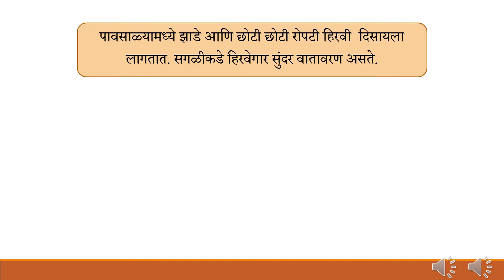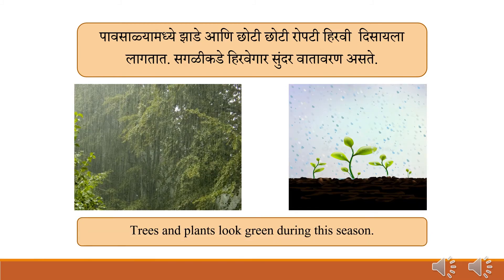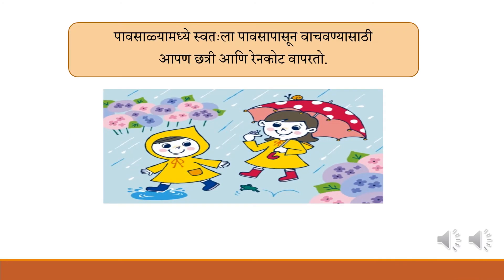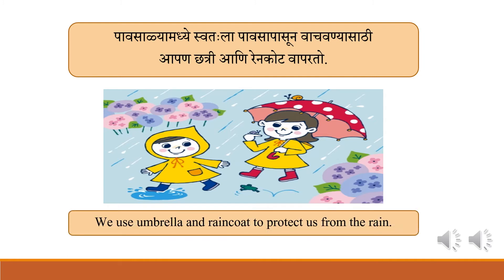During the monsoon season, rivers flow and small plants start looking green. The weather looks beautifully green and pleasant. Trees and plants look green during this season. We use an umbrella and raincoat to protect us from the rain.